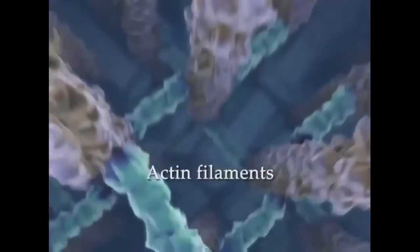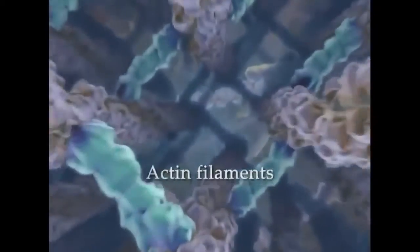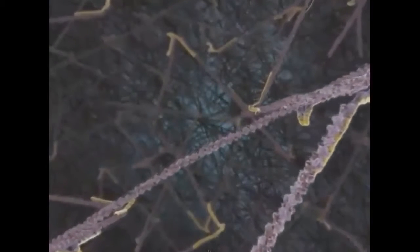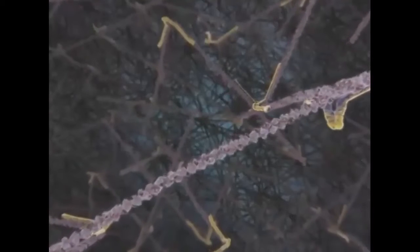Inside microvilli, actin filaments form tight parallel bundles, which are stabilized by cross-linking proteins. While deeper in the cytosol, the actin network adopts a gel-like structure, stabilized by a variety of actin binding proteins.